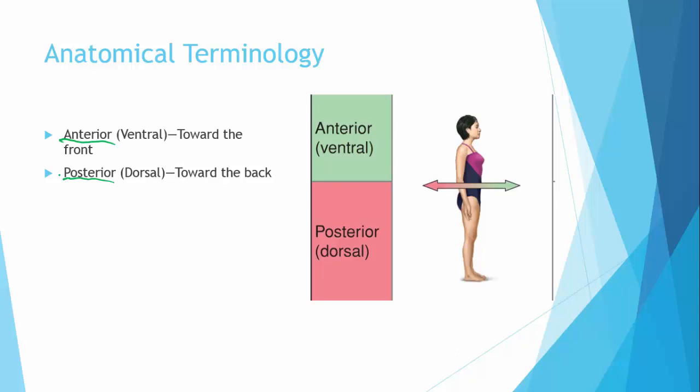If we're thinking about the anatomical position, things that would be anterior would be things like your nose, your knees, your toes. Things that would be posterior would include your heels, the back of your head, etc.